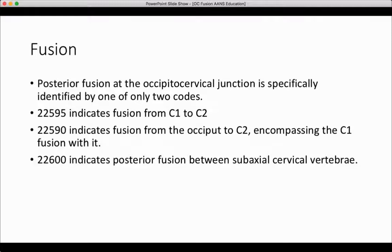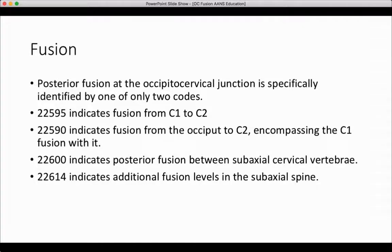22600 indicates posterior fusion between subaxial cervical levels and up to C2. 22614 indicates additional fusion levels in the subaxial spine. The same code is used for add-on fusion levels in the thoracic and lumbar spine.